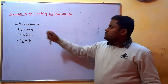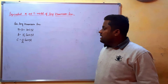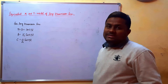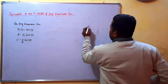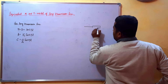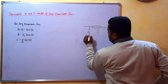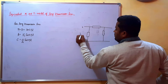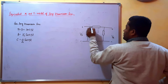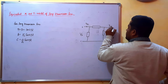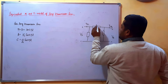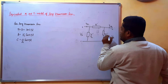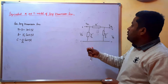These are the values for constants A, B, C, and D for long transmission line. These values are derived in my previous videos. Now consider the pi model. The pi model can be drawn as here. This is the sending end voltage, this is the receiving end voltage, this is the sending end current, and this is the receiving end current. The series impedance is Z' and the shunt admittance is Y'/2 on each side. So this is the pi model of long transmission line.